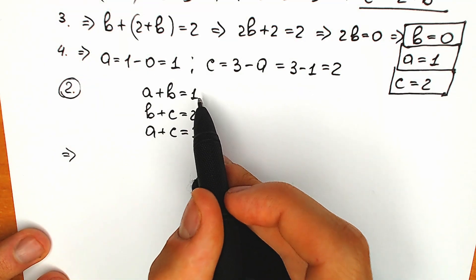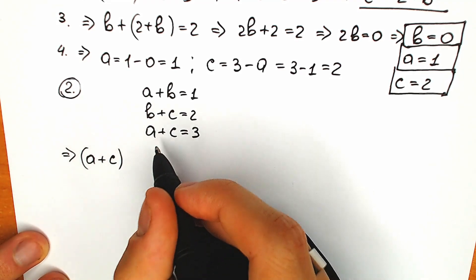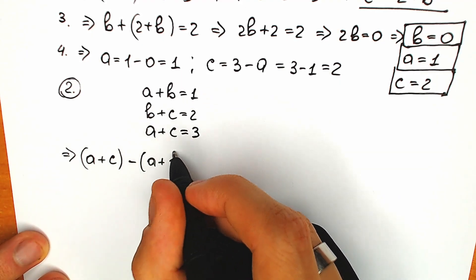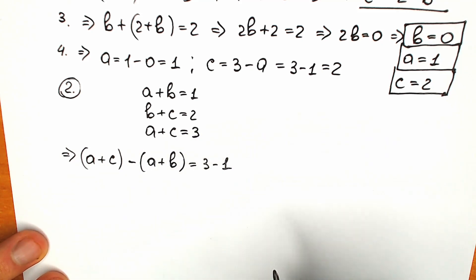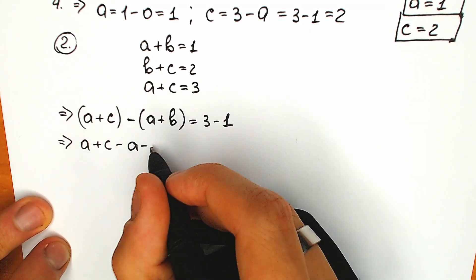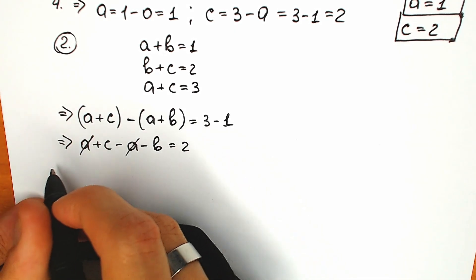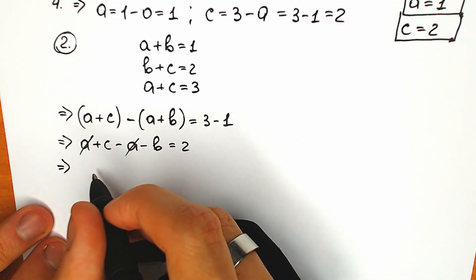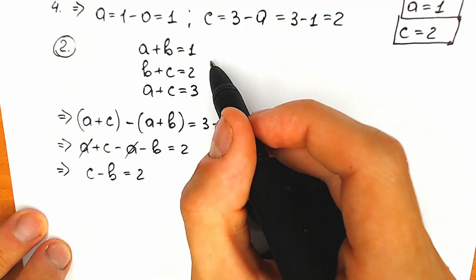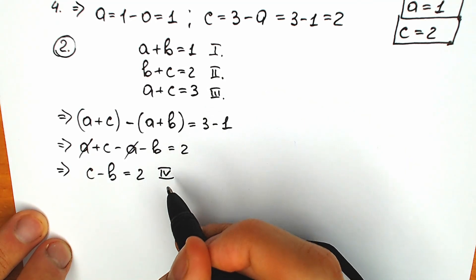Let's subtract equation 1 from equation 3. We have a plus c minus (a plus b) equal to 3 minus 1. Simplifying: a plus c minus a minus b equal to 2, and the a's cancel, leaving c minus b equal to 2. Let's call this equation 4.